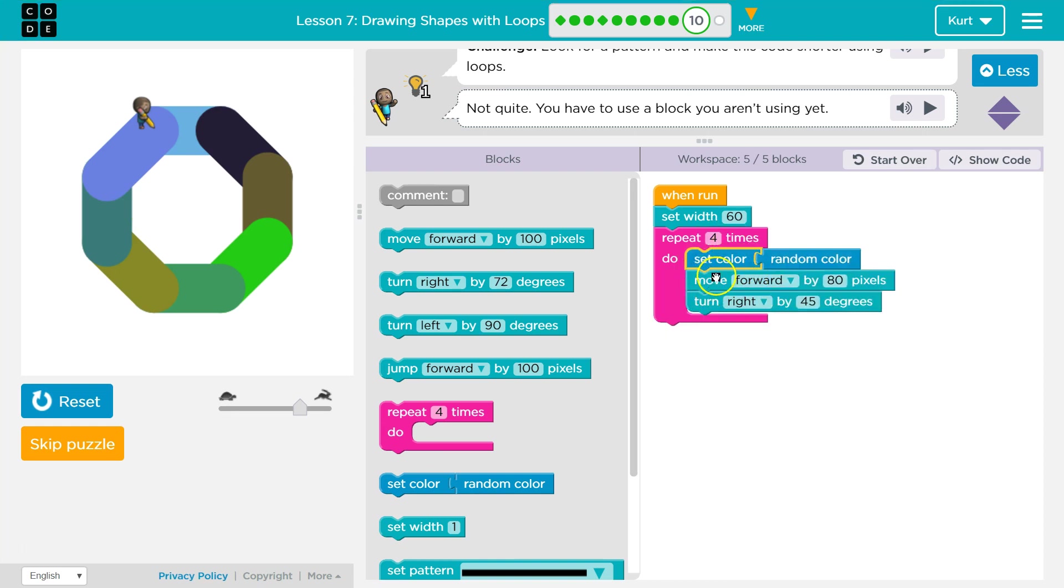And the code is going to run through, pick a random color, move forward, turn a little bit right, hit this and loop back around and do it again. I thought eight. Let's see if this works.